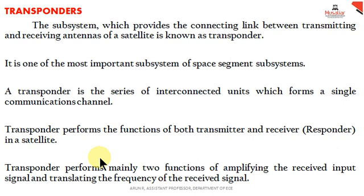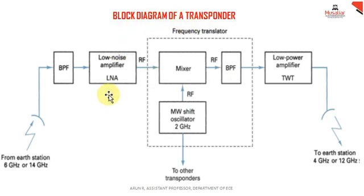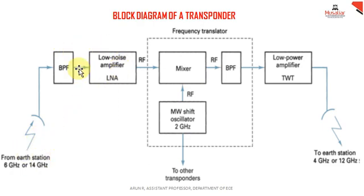In a satellite, a transponder can perform several functions of both transmitter and receiver. Mainly it has two functions: amplifying the received input signal, and translating the frequency of the received signal — just amplification and frequency conversion. These are the two major functions performed by transponders. The transponder receives signals from the ground station and, passing through a bandpass filter, the signal gets amplified through a low noise amplifier.